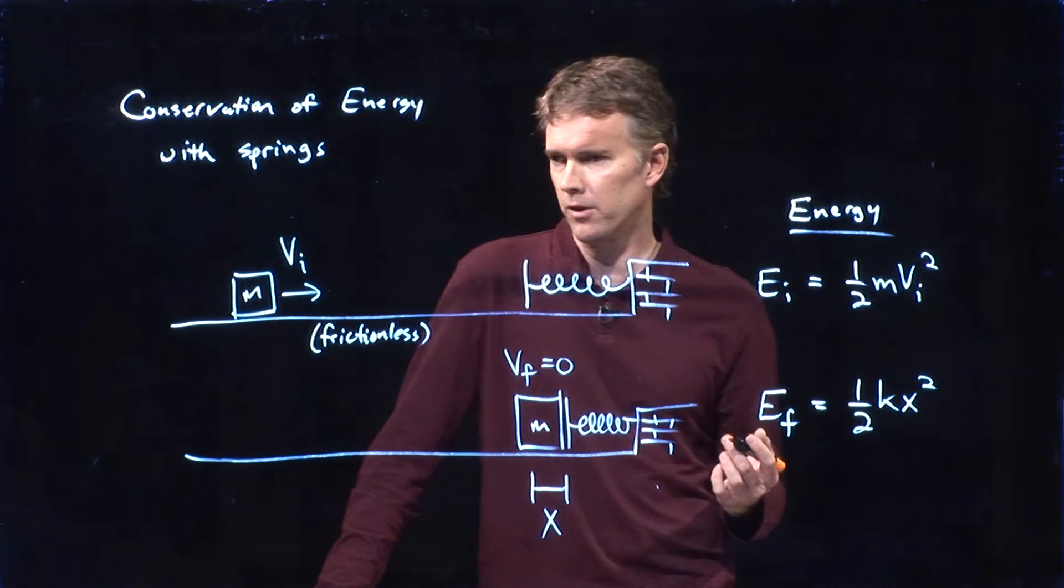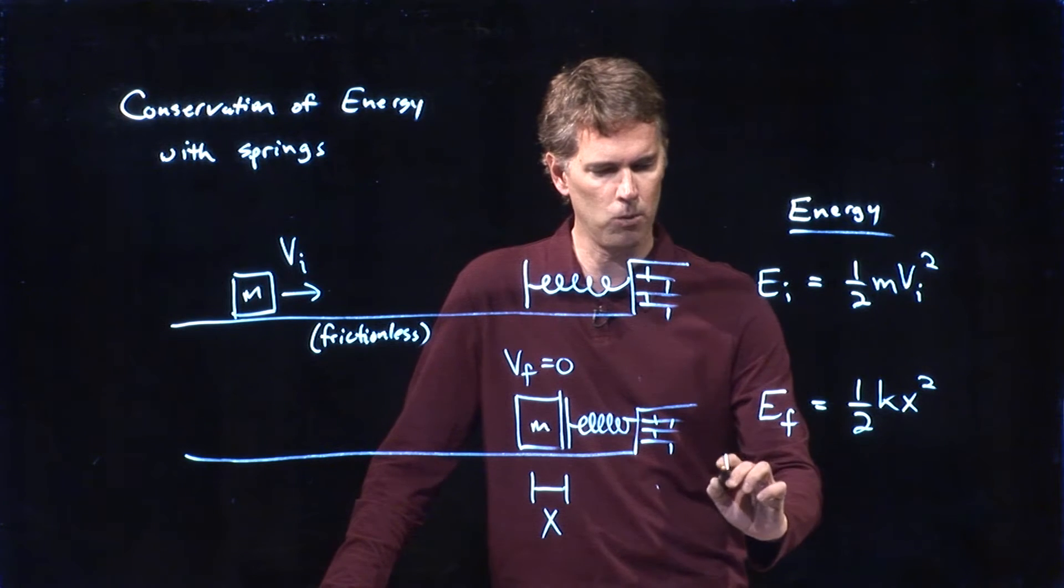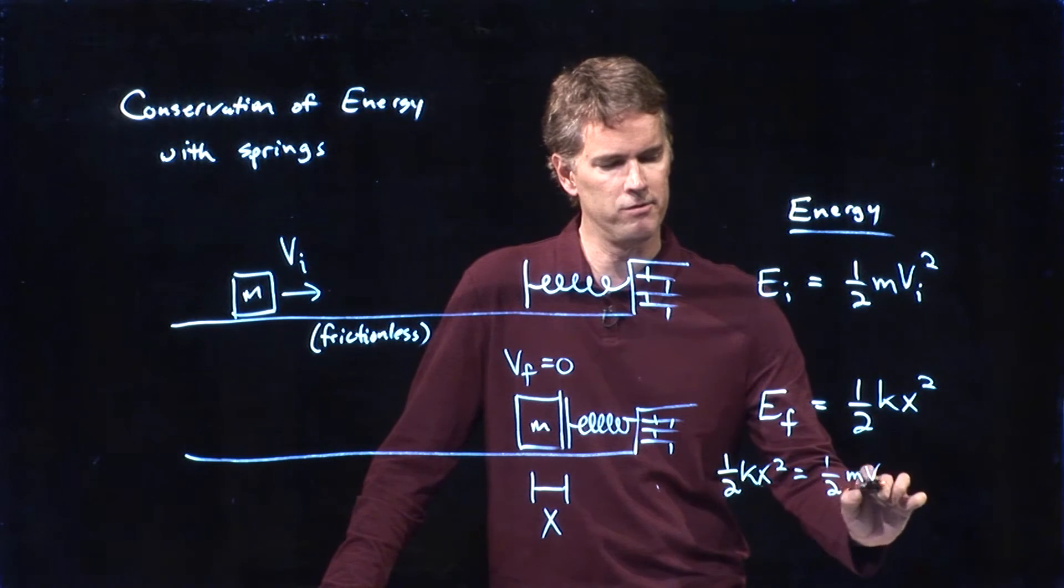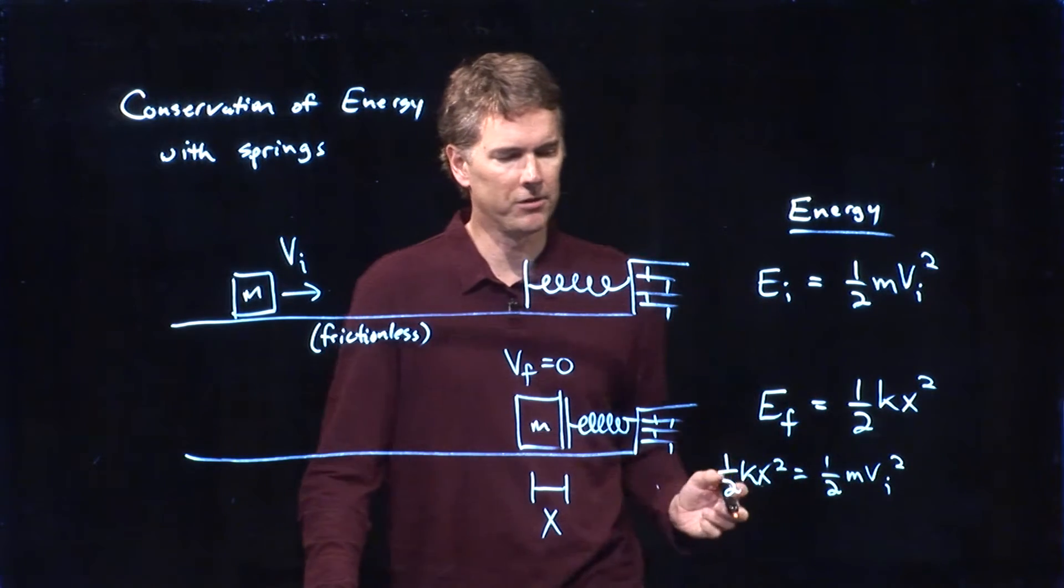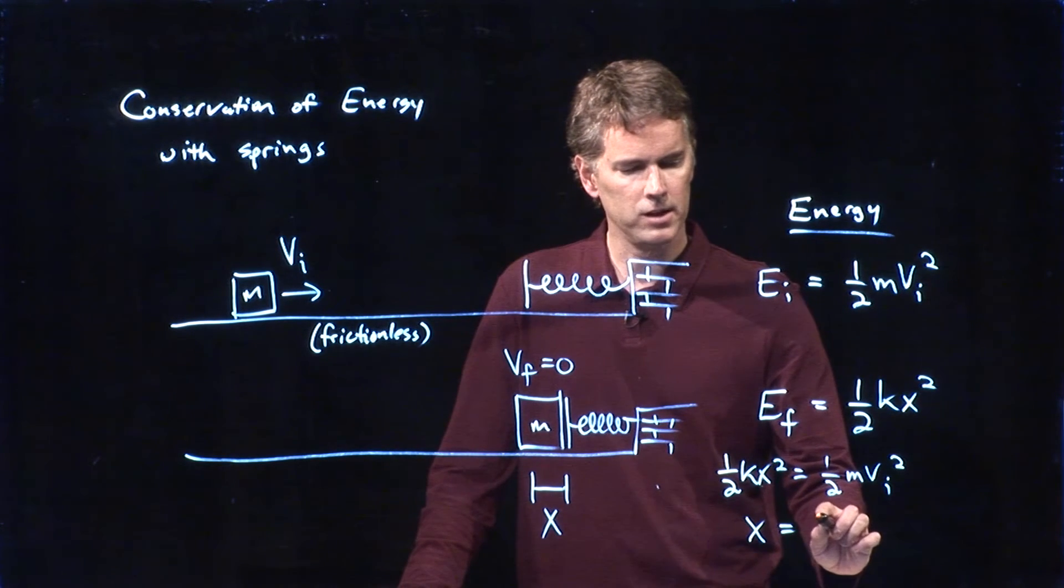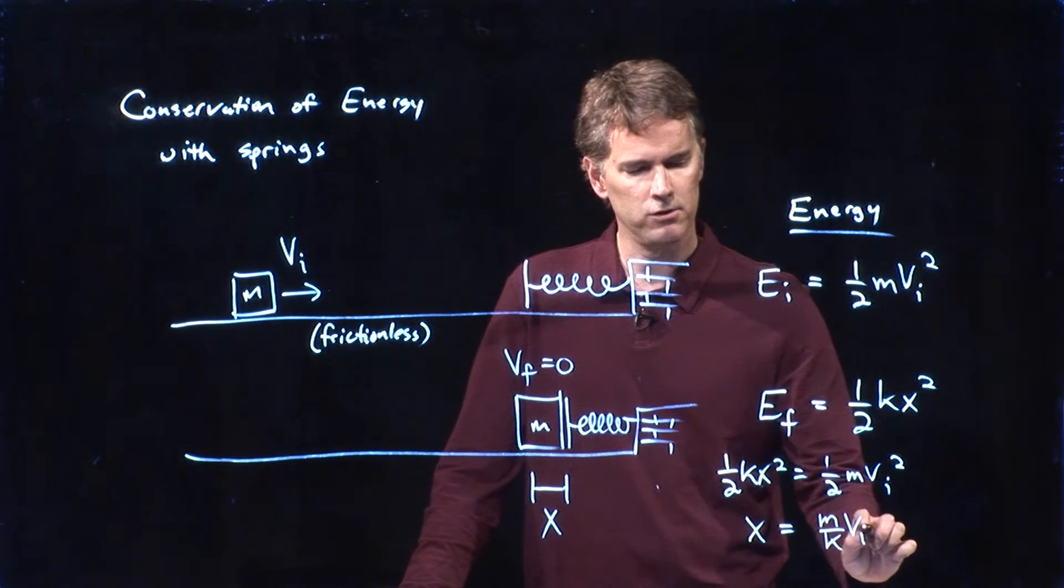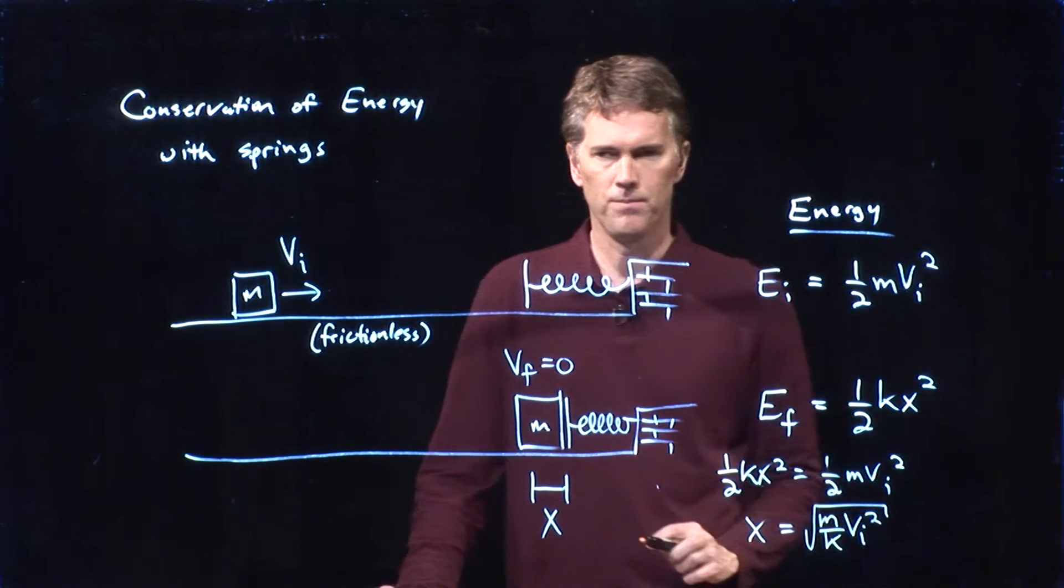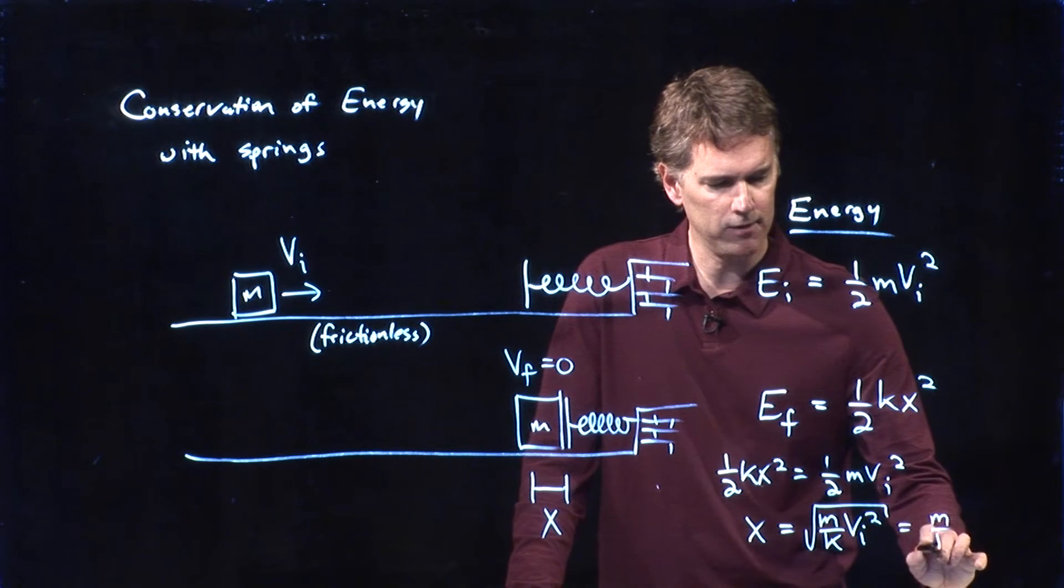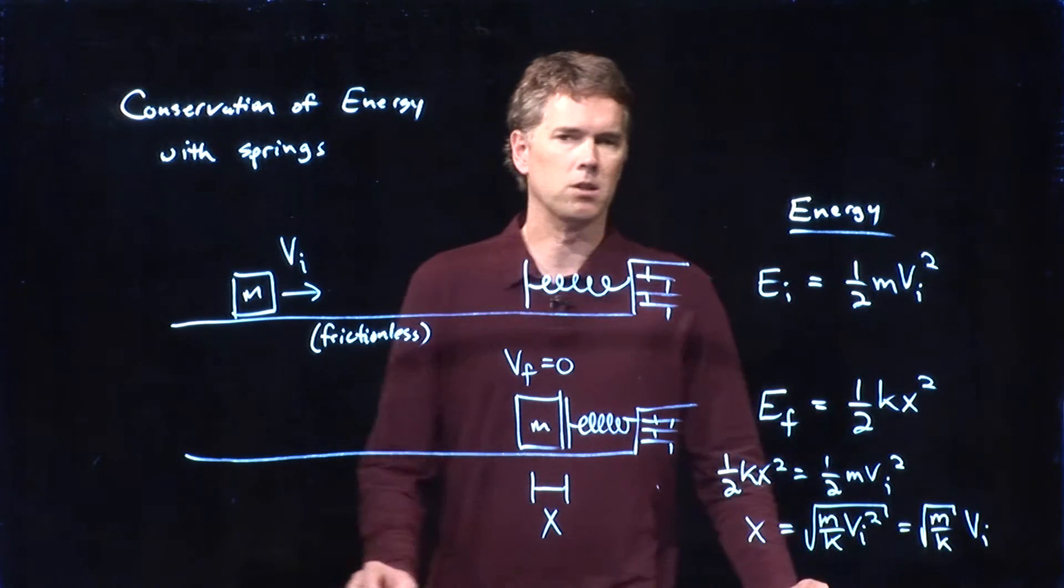And let's say now that we're trying to solve this thing for x. All right, these are equal. So I get one-half k x squared equals one-half m v i squared. And now I can quickly solve this thing for x. The halves go away. I can write this as x equals m over k v i squared. And I'm going to take the square root of that whole thing. If I take the square root of v i squared, I can in fact bring it out of the square root.